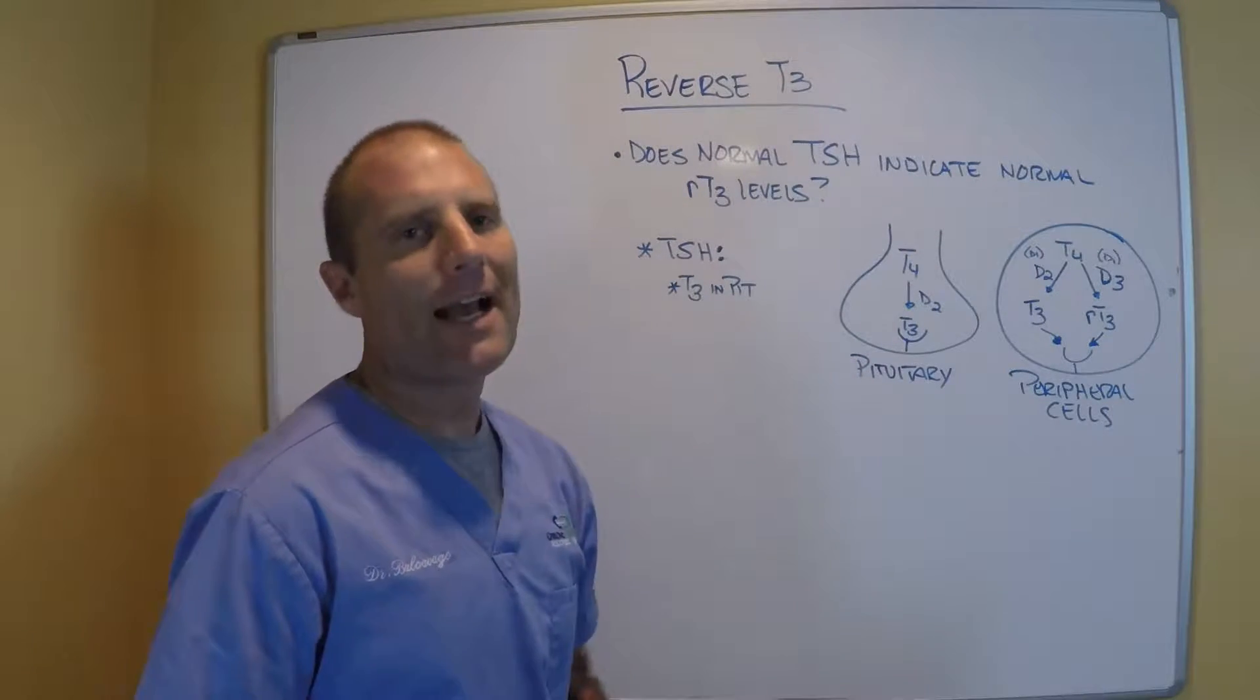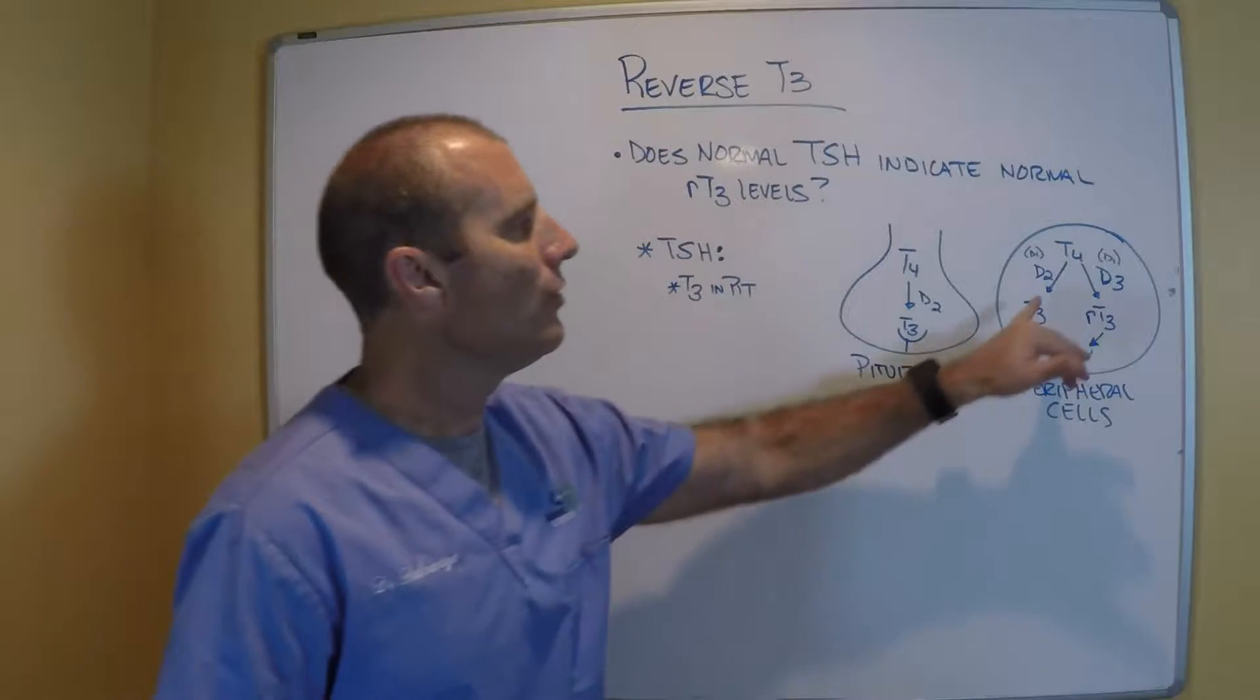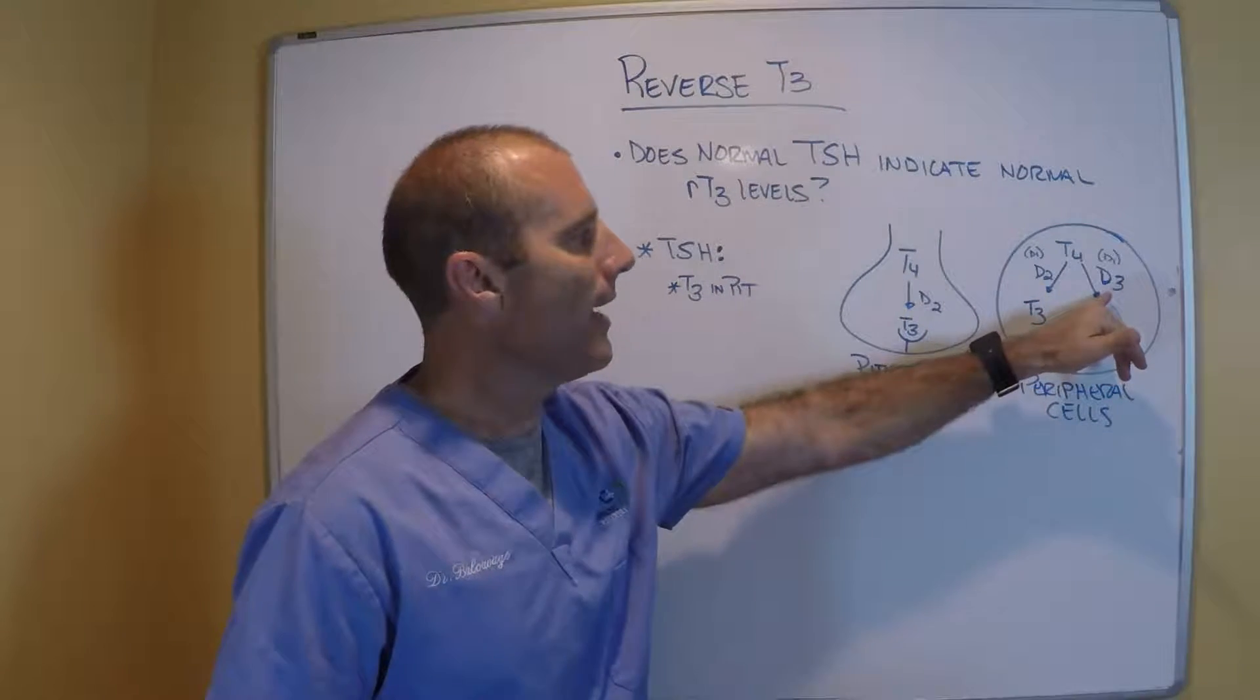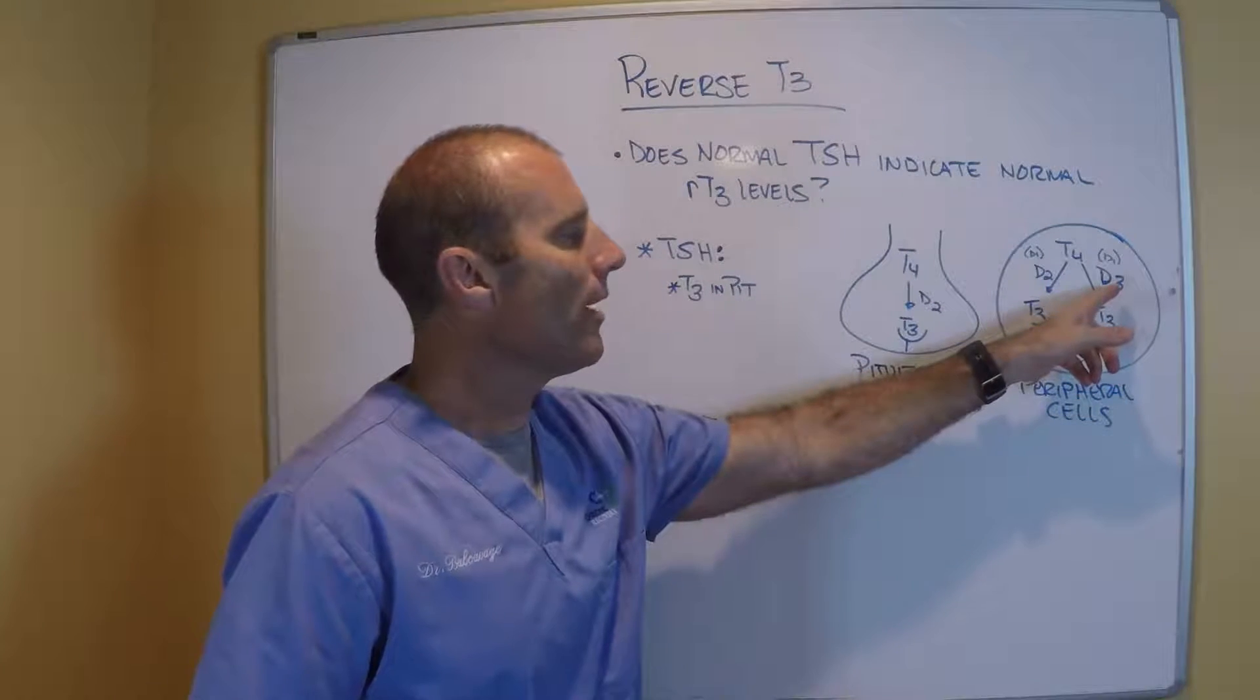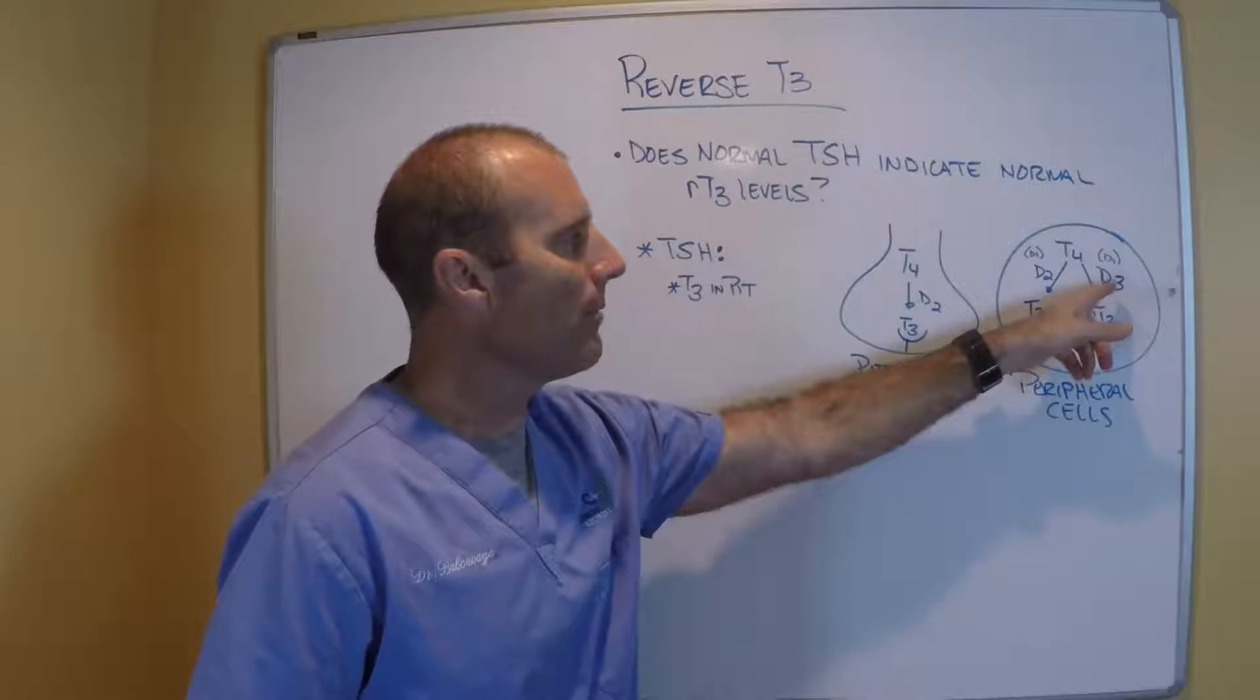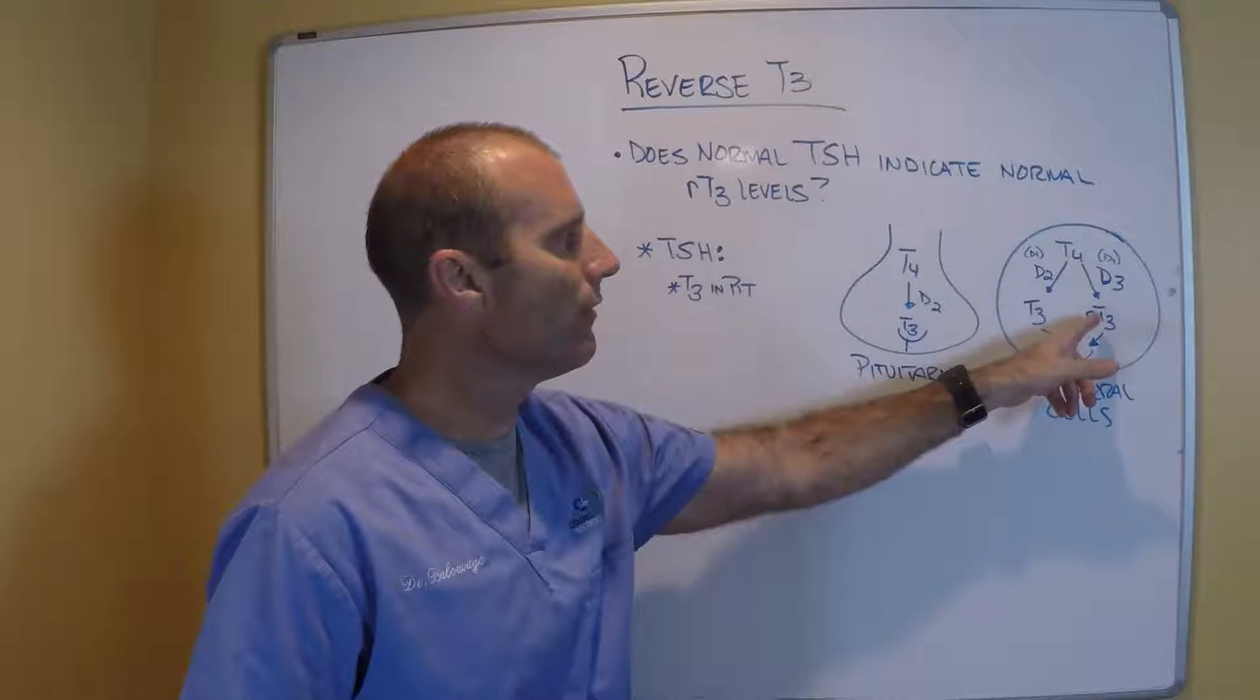So the peripheral cells act a little bit differently. They do have D2, they have D3, and they have another enzyme called D1. But D3 is the primary enzyme that converts T4 to reverse T3.